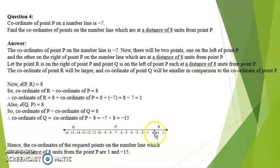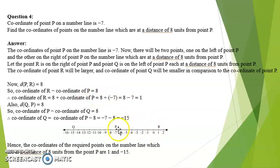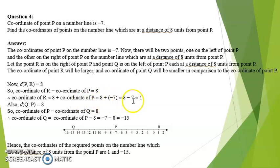Distance PR is 8. Since R is larger, coordinate of R minus coordinate of P equals 8, so R equals 8 plus coordinate of P. Coordinate of P is known to us, so we have 8 plus minus 7, which equals 8 minus 7. The answer is 1.